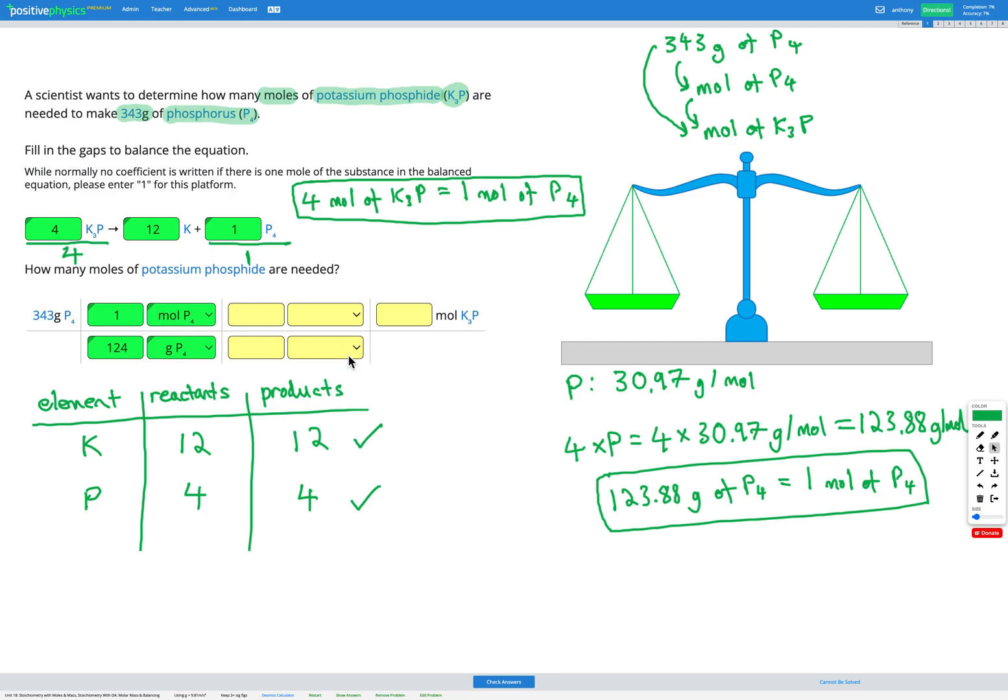So we've got moles P4 on the top, so I'm going to put moles P4 on the bottom as well so that those will cancel out. And I want to end up with moles of K3P, so that's going on the top. Then we need to add our numbers just to make sure the top and bottom are equal. So we've got one mole of P4 equals four moles of K3P.